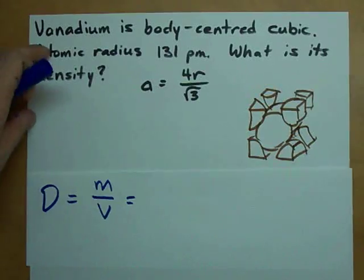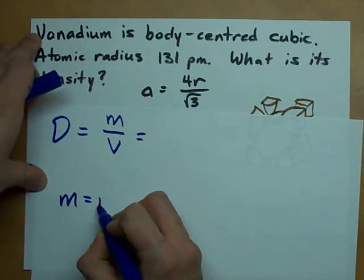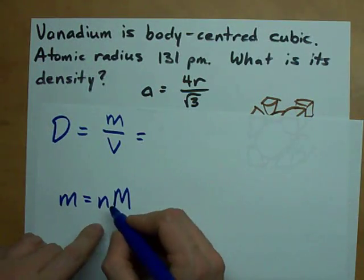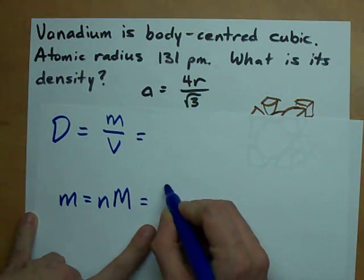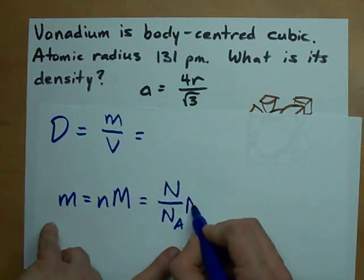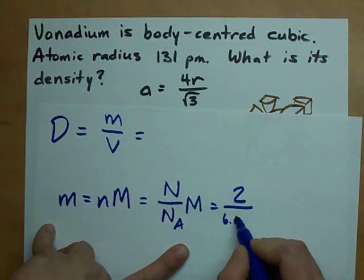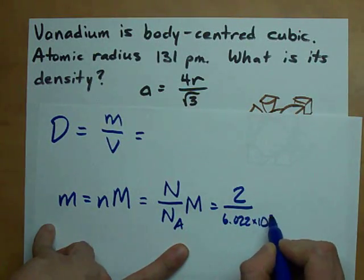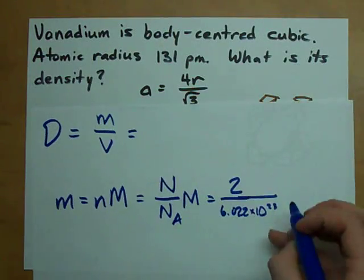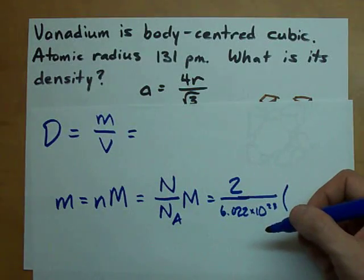So what's the mass of 2 atoms? Well, the mass is generally the number of moles times the molar mass, but the number of moles here is actually going to be based off of the number of molecules that you put inside of it. So, 2 atoms divided by Avogadro's number, to put it into moles, times the atomic mass of vanadium, which is 50.94 grams per mole.